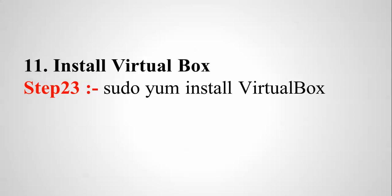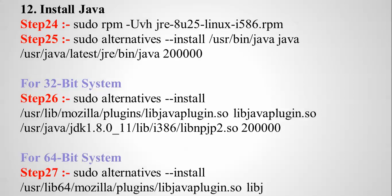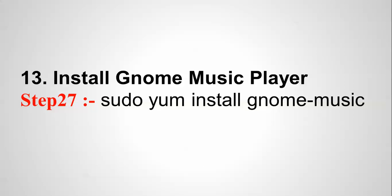The next step is to install VirtualBox — type 'sudo yum install virtualbox', or you can find it in the Software Center. For installing Java: for 32-bit systems type step 26 commands, and for 64-bit systems type step 27 commands. First type step 24 and 25, then step 27 for 64-bit, or step 26 for 32-bit. To install a Java music player, type the install java music player command.